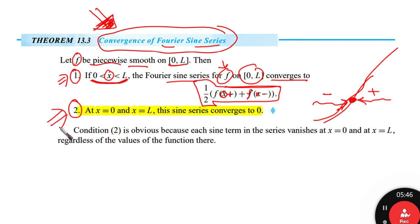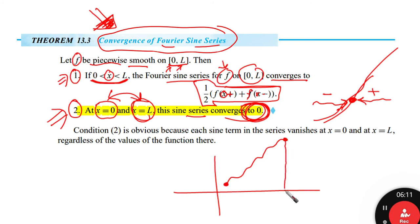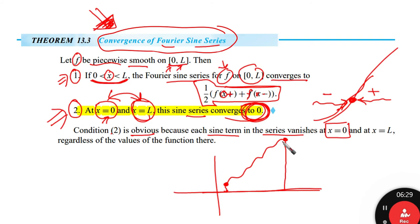The second convergence condition is at the ends: at x equal to 0 and x equal to L. The sine series converges to exactly 0 at those endpoints. This condition is obvious because each sine term in the series vanishes at x equal to 0. Similarly, at x equal to L, substituting gives sine(n pi L over L) which also equals 0.